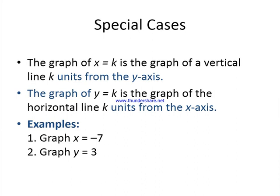There are some special cases. The graph of x equals k is a vertical line k units from the y-axis, as shown in the next slide. Similarly, the graph of y equals k is a horizontal line k units from the x-axis. Let us understand this with two examples: graph the equation x equals minus seven, and graph the equation y equals three.